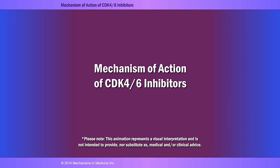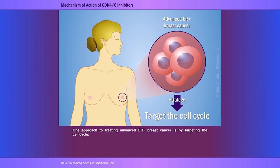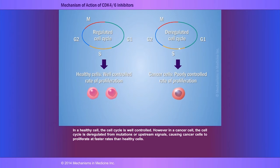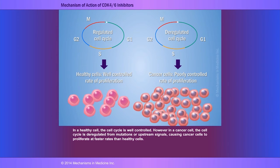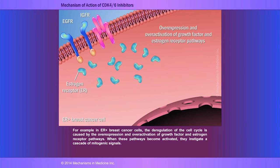One approach to treating advanced estrogen receptor-positive breast cancer is by targeting the cell cycle. In a healthy cell, the cell cycle is well-controlled. However, in a cancer cell, the cell cycle is deregulated from mutations or upstream signals, causing cancer cells to proliferate at faster rates than healthy cells. In estrogen receptor-positive breast cancer cells, the deregulation of the cell cycle is caused by the overexpression and overactivation of growth factor and estrogen receptor pathways.